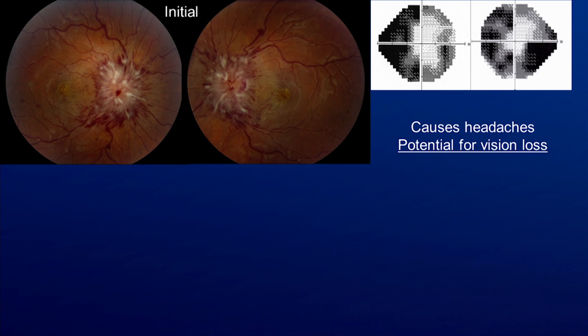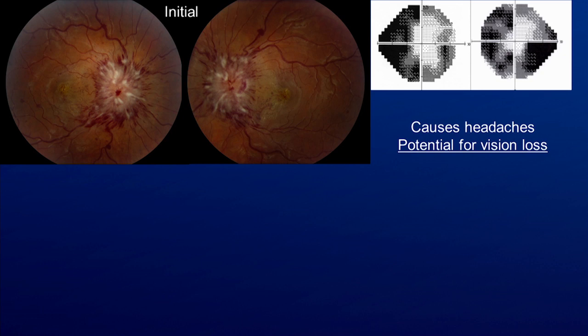Patients with pseudotumor cerebri typically have headaches, which can be quite debilitating. However, the main reason we need to diagnose and treat this condition is the potential for vision loss, which can be permanent in up to 40% of patients. Here is a patient who had severe papilledema at initial presentation, and even after treatment, ended up with significant pallor of the optic nerves and some persistent visual field defects.